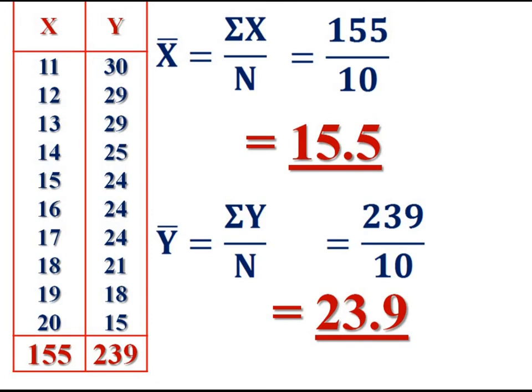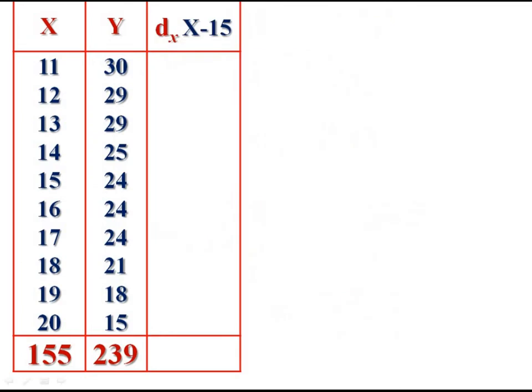Here we are computing correlation under the assumed mean method. The assumed mean for x is taken as 15, and for y as 23. The third column will be the deviation of values from the assumed mean, denoted dx — deviation of x values from assumed mean 15.